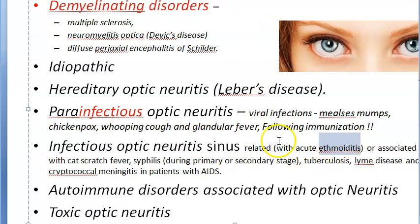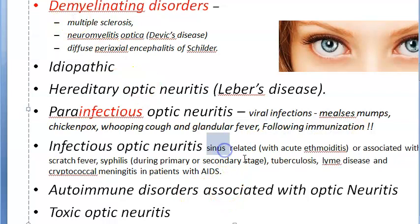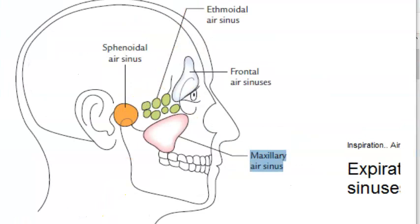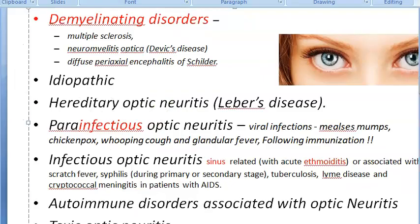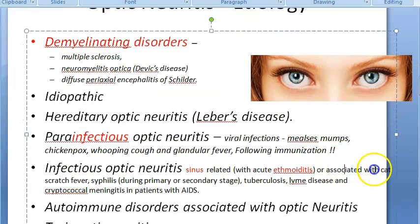From the sinuses — specifically the ethmoid air sinuses shown here — the optic nerve can get affected. Infectious causes also include cat scratch fever, syphilis, tuberculosis, Lyme's disease, and cryptococcal meningitis in patients with AIDS.